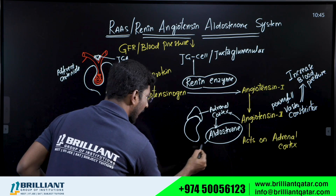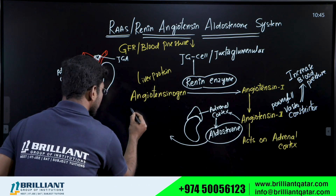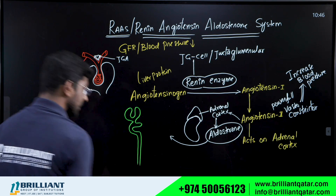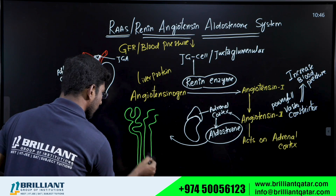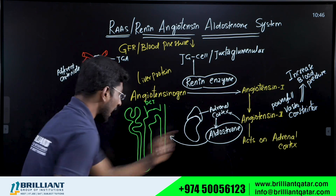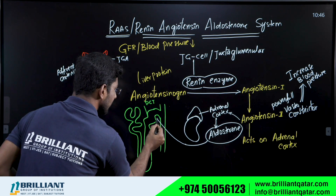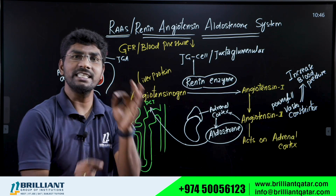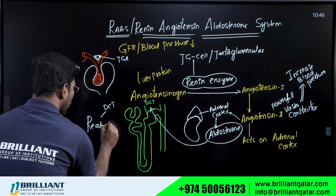Once Aldosterone is released from the adrenal cortex, it acts on the DCT — Distal Convoluted Tubule — of the nephron. Looking at the nephron structure: this is Bowman's capsule, PCT, descending limb of the loop of Henle, ascending limb, and then the DCT. This aldosterone hormone acts on the DCT of the nephron.